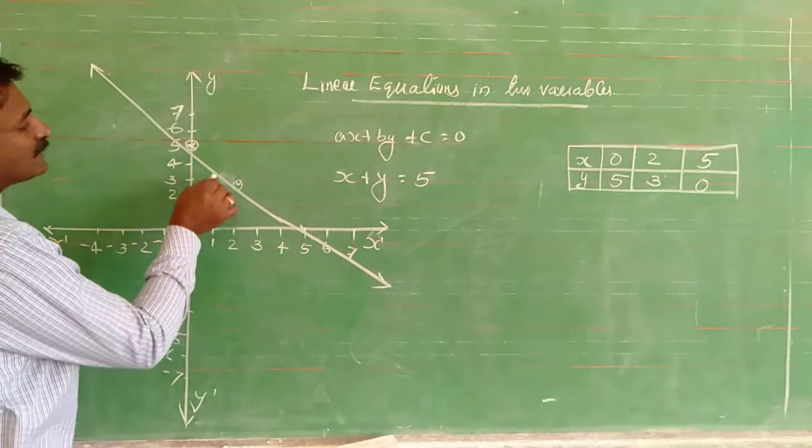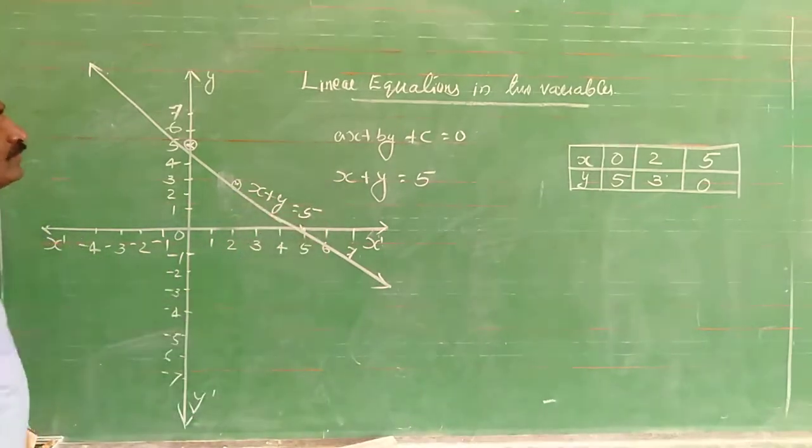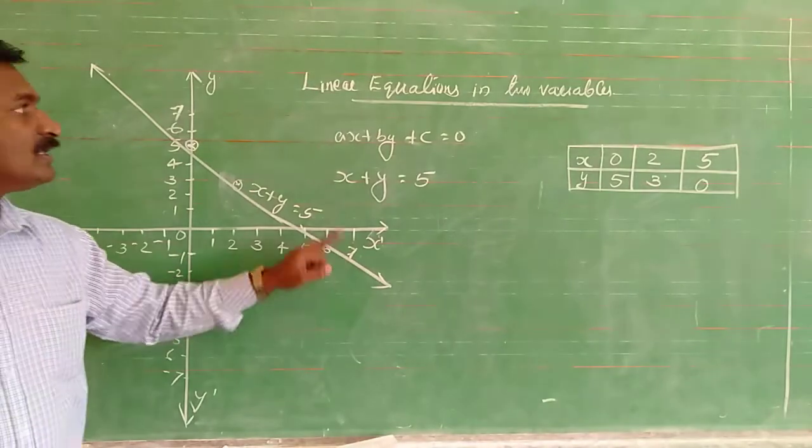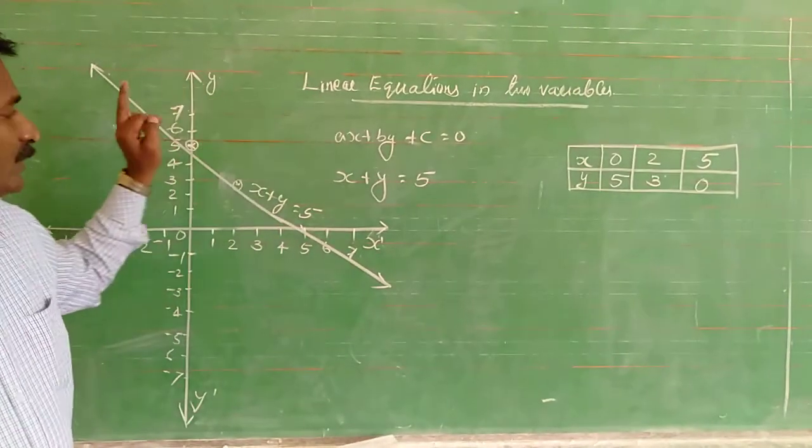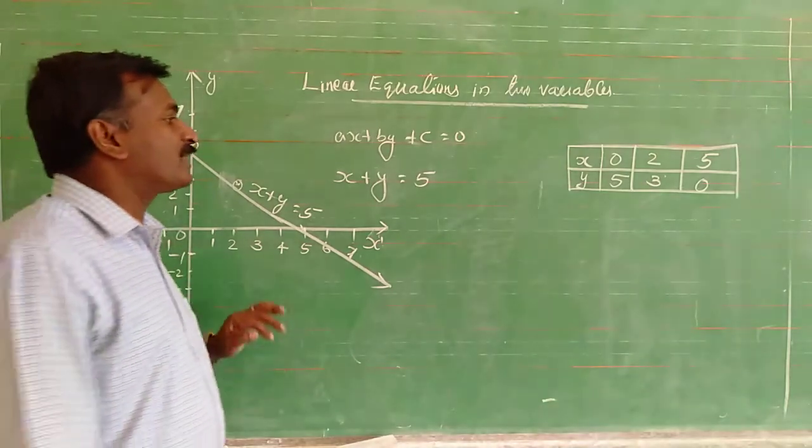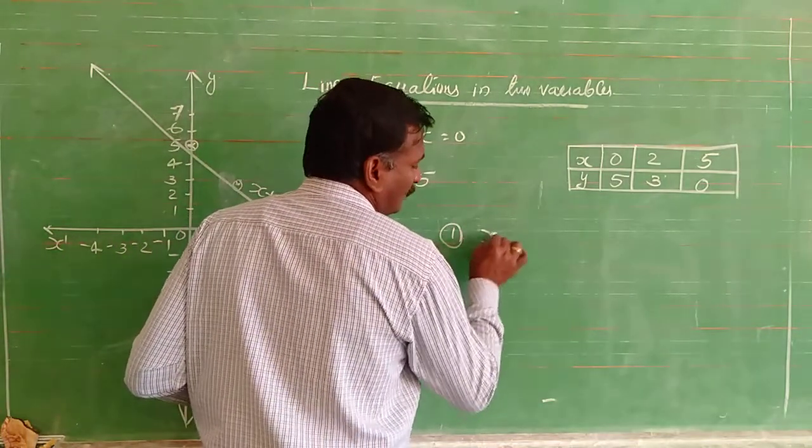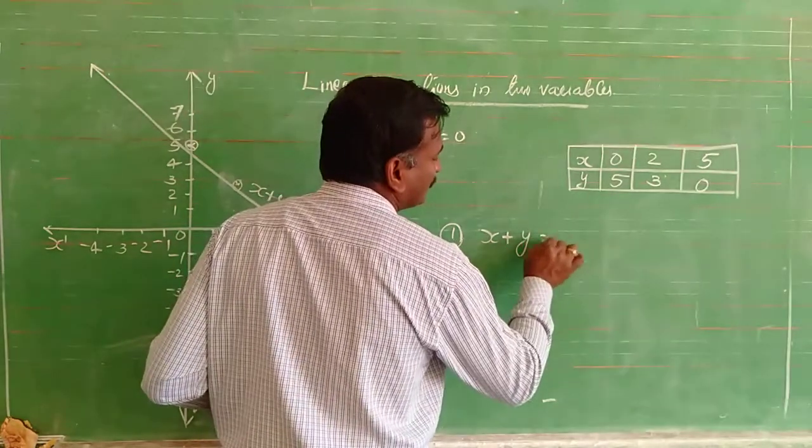For the equation x plus y is equal to 5, this is the straight line. Now, you will draw some graphs.